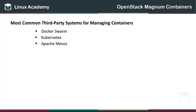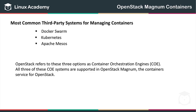Kubernetes handles scheduling onto nodes in a compute cluster and manages workloads in desired states. Mesos, developed by Apache, can be used to deploy and manage application containers in large-scale clustered environments. OpenStack refers to these three options as container orchestration engines, or COE. All three of these COE systems are supported in OpenStack Magnum, the container service for OpenStack.